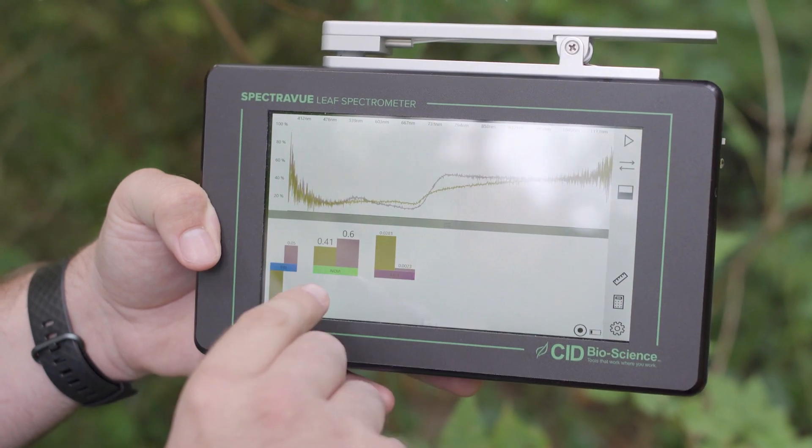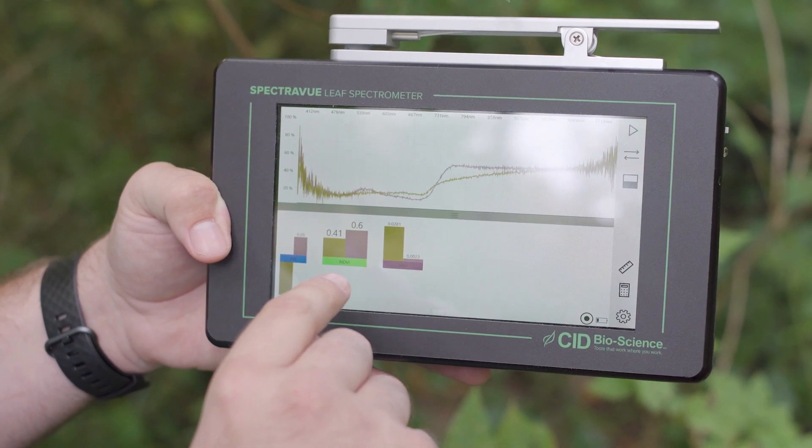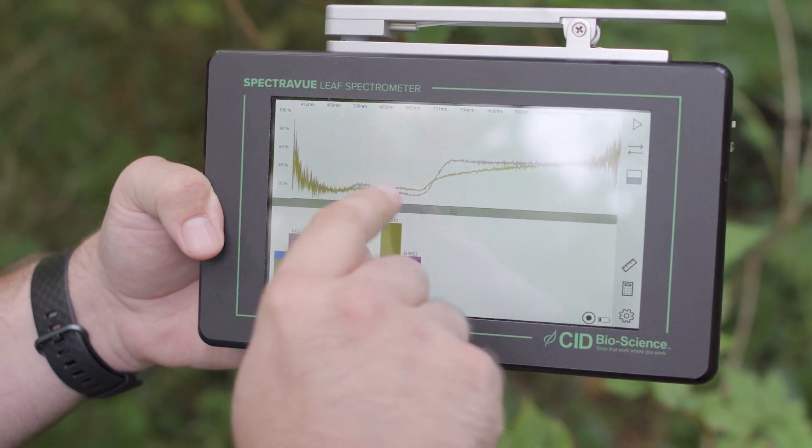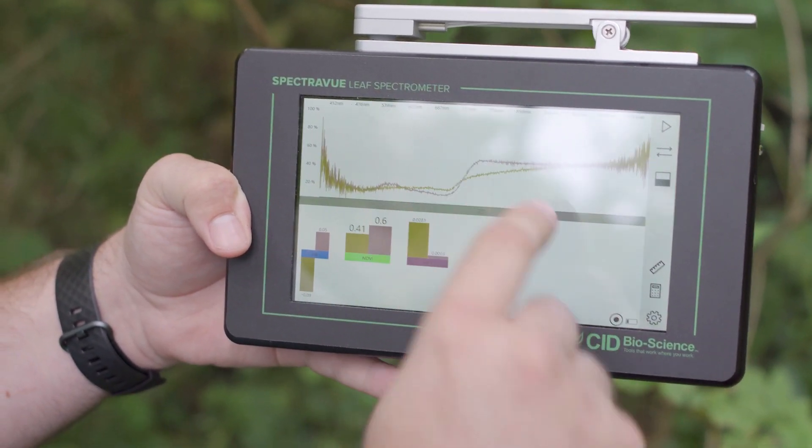So the first measurement we took was the healthy leaf, and that is represented by the purple bars down below, as well as the purple line up on the spectrograph above.